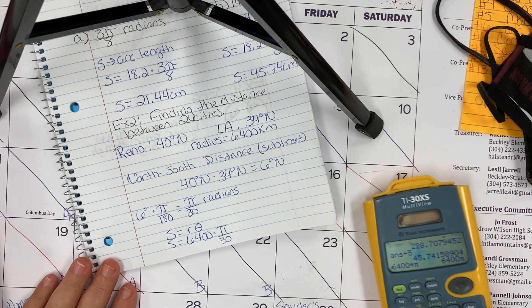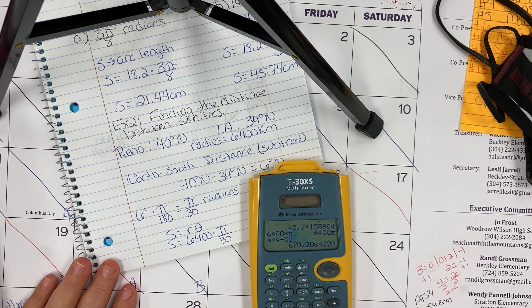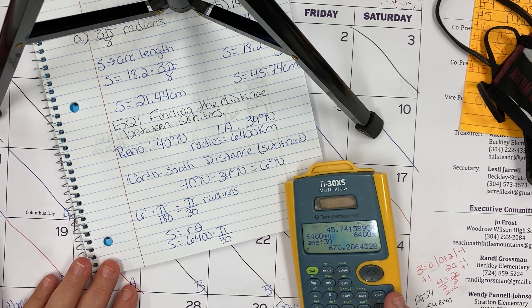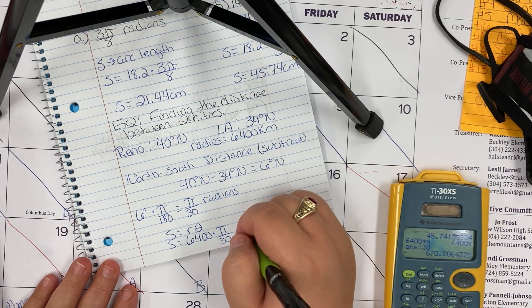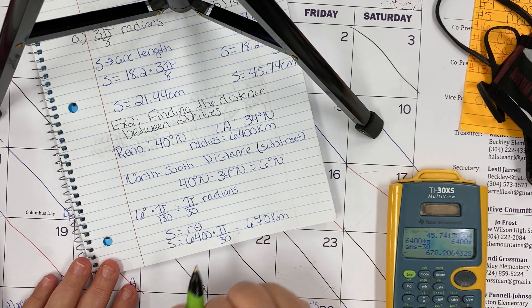So 6400 times π, and we're going to divide that by 30, and we should get 670 kilometers.